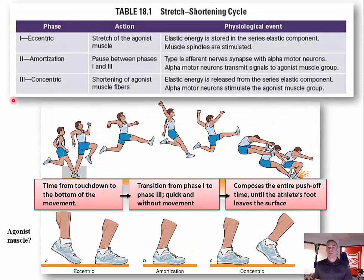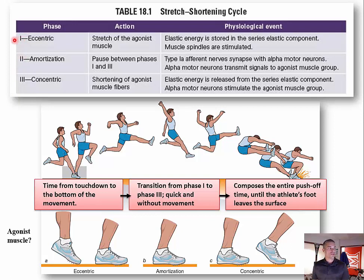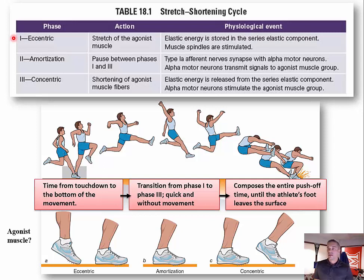The stretch shortening cycle involves three distinct phases. Phase one is known as the eccentric phase, which involves preloading the agonist muscle groups — the prime movers. During this phase, the series elastic component stores elastic energy and the muscle spindles are stimulated.